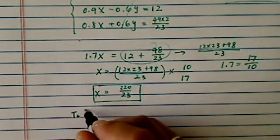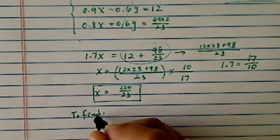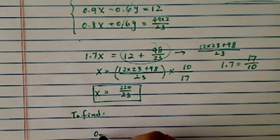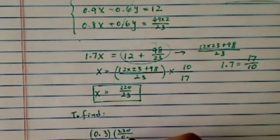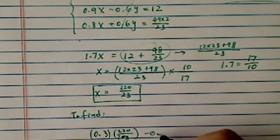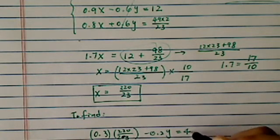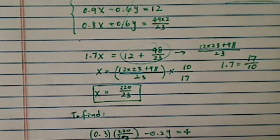To find y, I'll use 0.3 times 220 over 23 here, minus 0.2y is equal to 4. So 0.2y is equal to, let's see, 66 over 23, I multiply at the top out, minus 4.